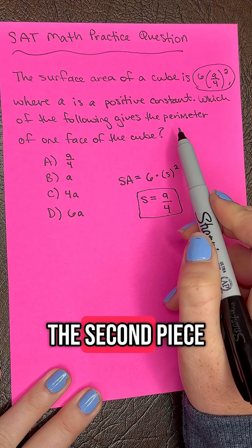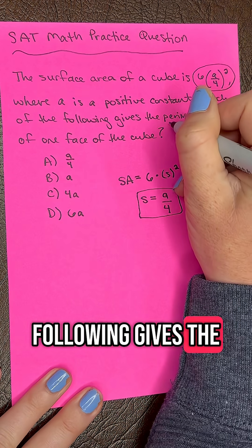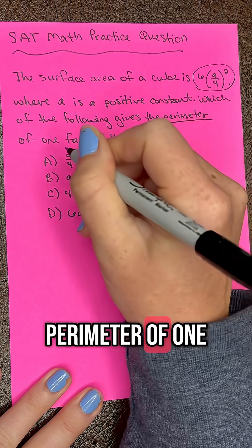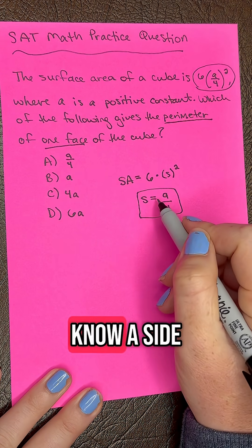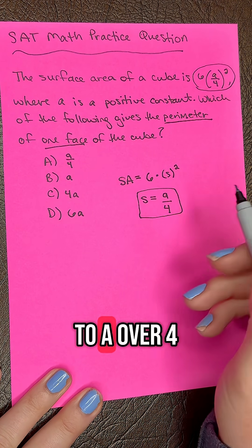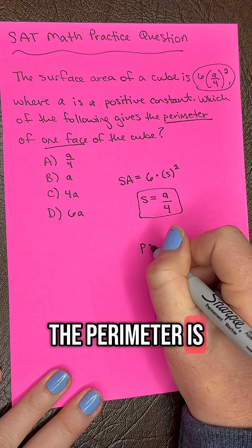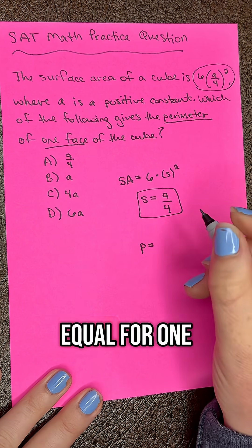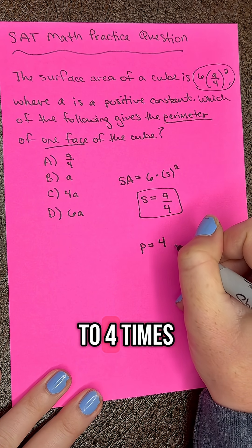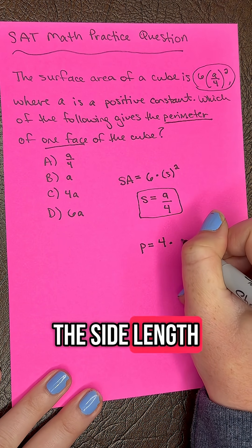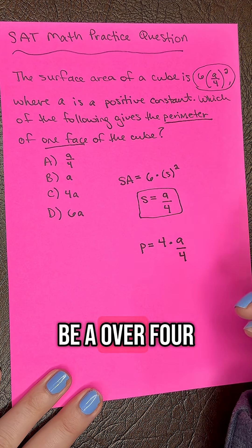Then we need to think about the second piece. They want to know which of the following gives the perimeter of one face of the cube. If we know a side length is equal to A/4, we know that the perimeter is going to be equal to 4 times the side length, which we know from step 1 is going to be A/4.